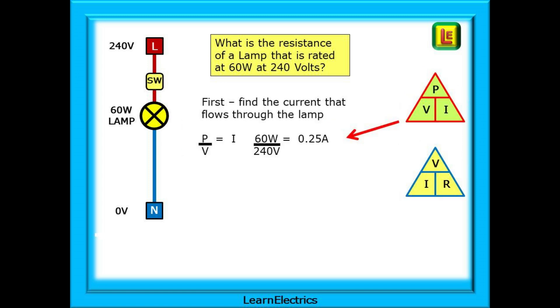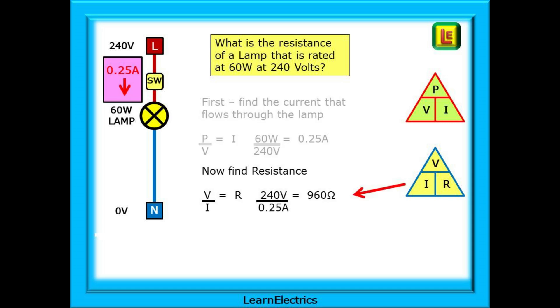First, find the current that flows through the lamp using the power triangle. Power divided by voltage will give us the current in amps. So 60 watts divided by 240 volts is 0.25 amps. A 240 volt, 60 watt lamp will consume about a quarter of an amp. So why has your bedside lamp got a 13 amp fuse in it? But that's for another video.